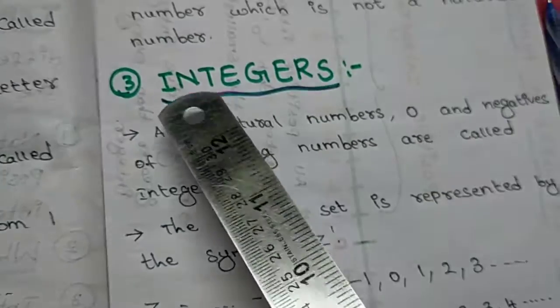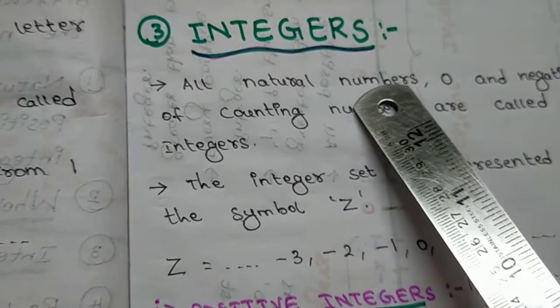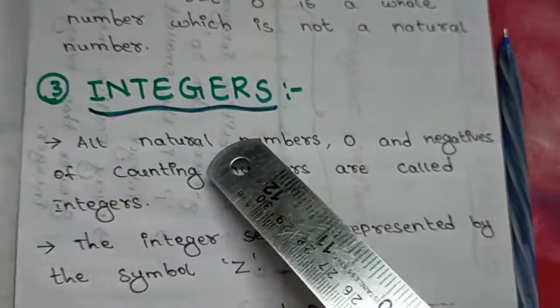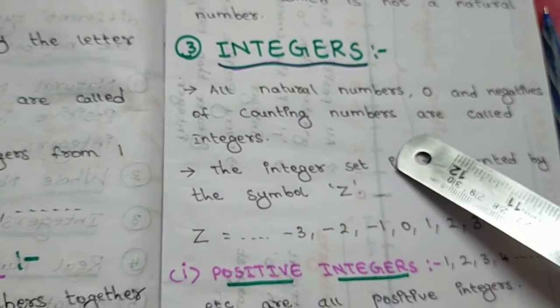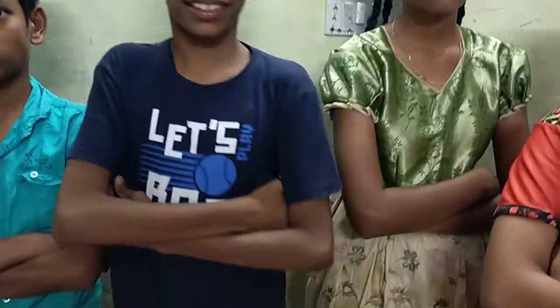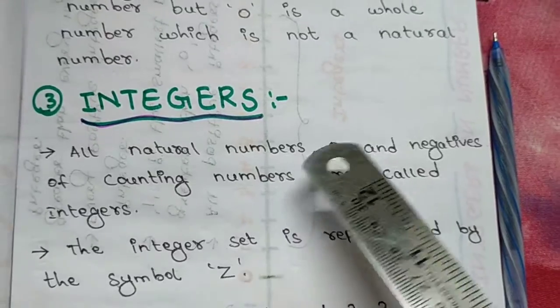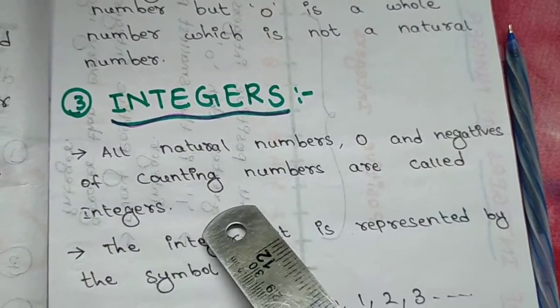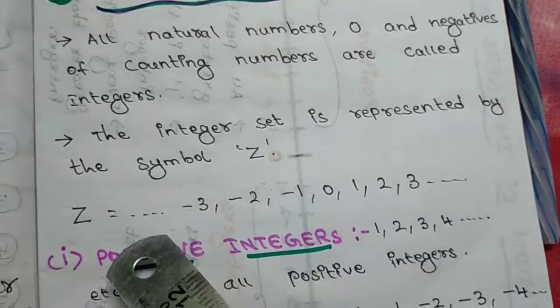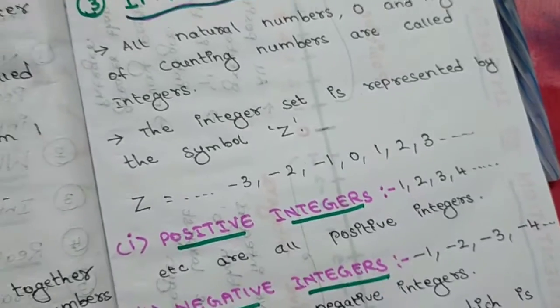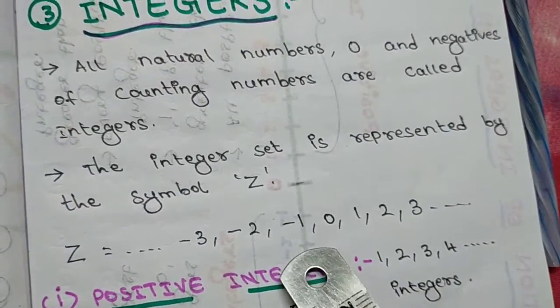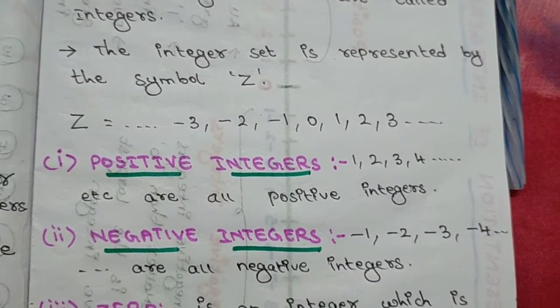Next is our chapter topic — integers. All natural numbers, 0, and the negatives of the counting numbers are called integers. The numbers which have a minus sign are called negative numbers, and the numbers which have a plus sign are called positive numbers, and 0 also — these together are called integers. Integers are represented by the symbol Z. So Z equals: ...minus 3, minus 2, minus 1, 0, 1, 2, 3... It is infinite on both sides.